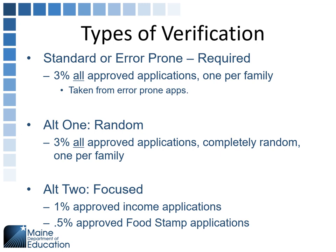Error prone is specific — 3% of all approved applications, focusing on the error prone applications. Alternate one is what's called random: 3% of all approved applications, regardless of how it was approved. If that application is giving that child eligibility, it's subject to random verification. Alternate two is focused: 1% of the approved income applications and a half a percent of the approved food stamp applications. If you have a large number of applications, alternate two might help you verify fewer applications, but if you only have 30 or 50, this really isn't going to help you.